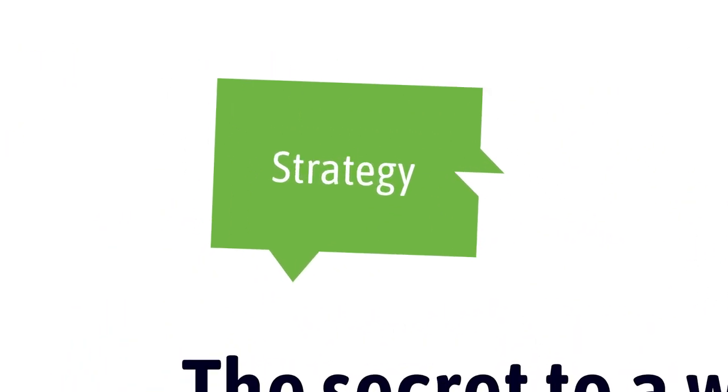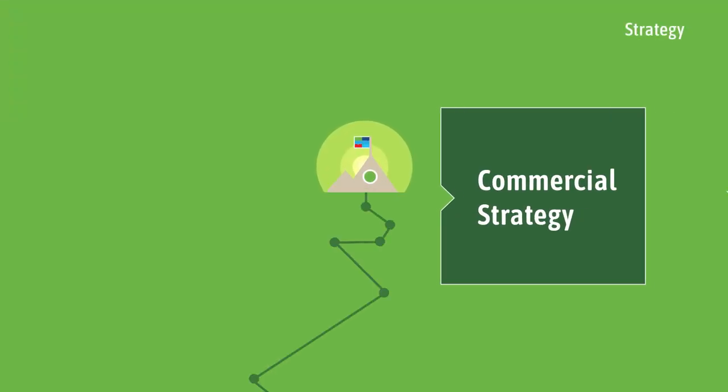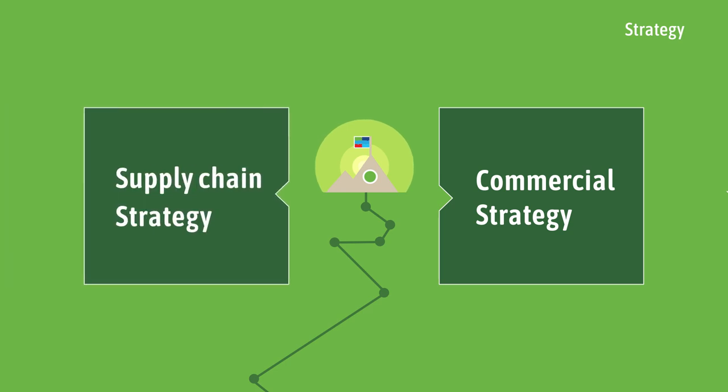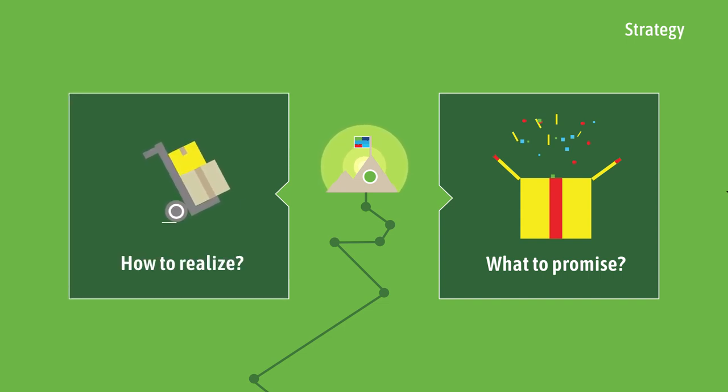The first piece of the alignment puzzle is a well-defined strategy. This should consist of a commercial strategy and a supply chain strategy. In other words, what are you going to promise your customers and how are you going to keep that promise?